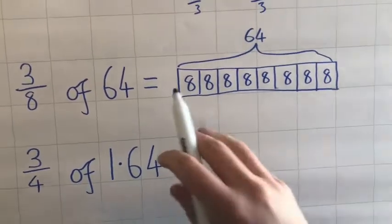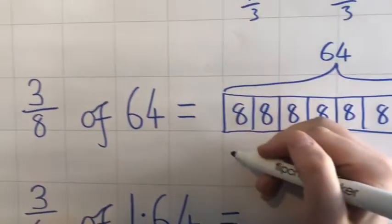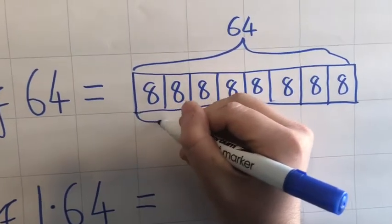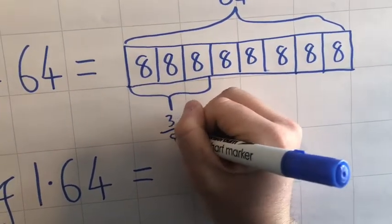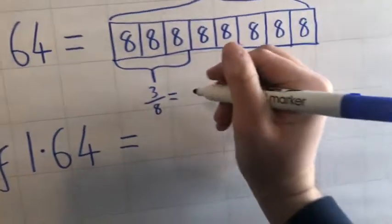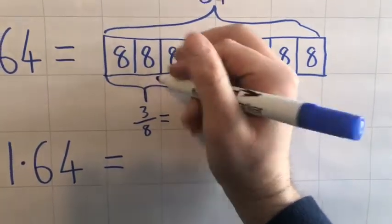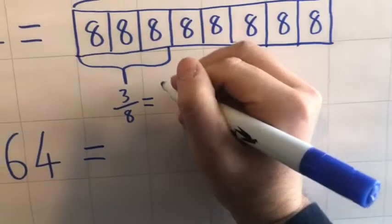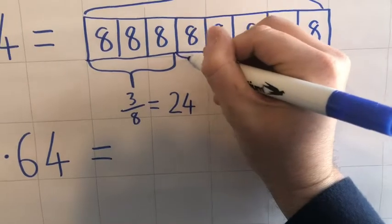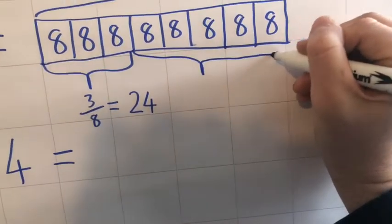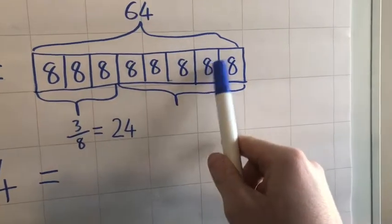So from this I can see that one eighth is eight. If I want to find three eighths, I need to look for three of them. So therefore, three eighths would equal three: eight add eight add eight, or eight times three—eight, sixteen, twenty-four. I can also see that actually five eighths of 64: eight, sixteen, twenty-four, thirty-two, forty.